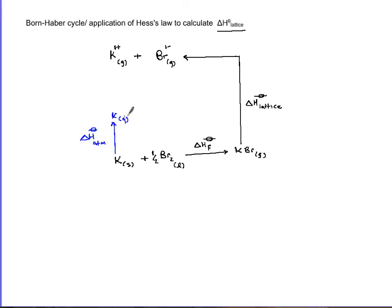The next step is to go from K to K1+. You know that process—that's ionization energy to remove one mole of electrons from the mole of gaseous atoms. This is ionization energy, an endothermic process.